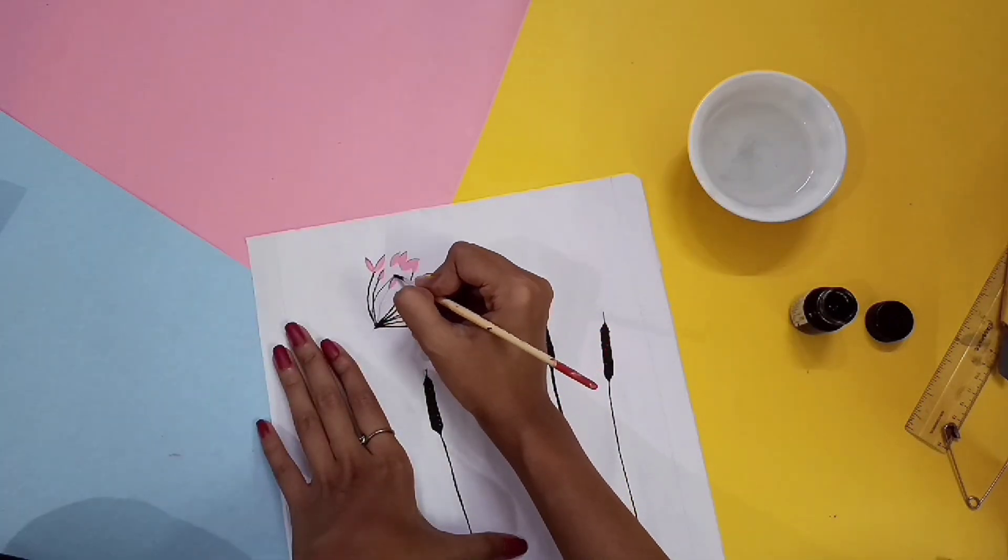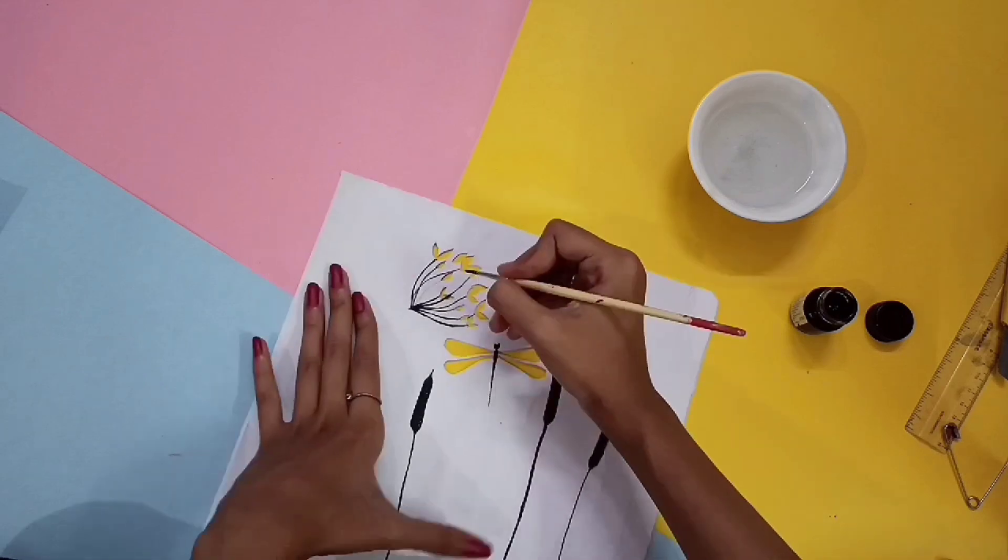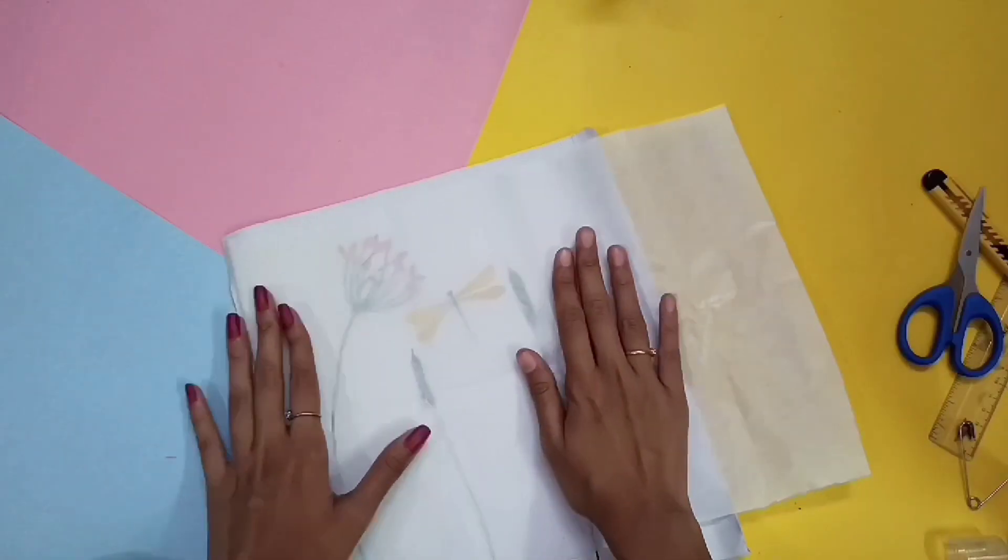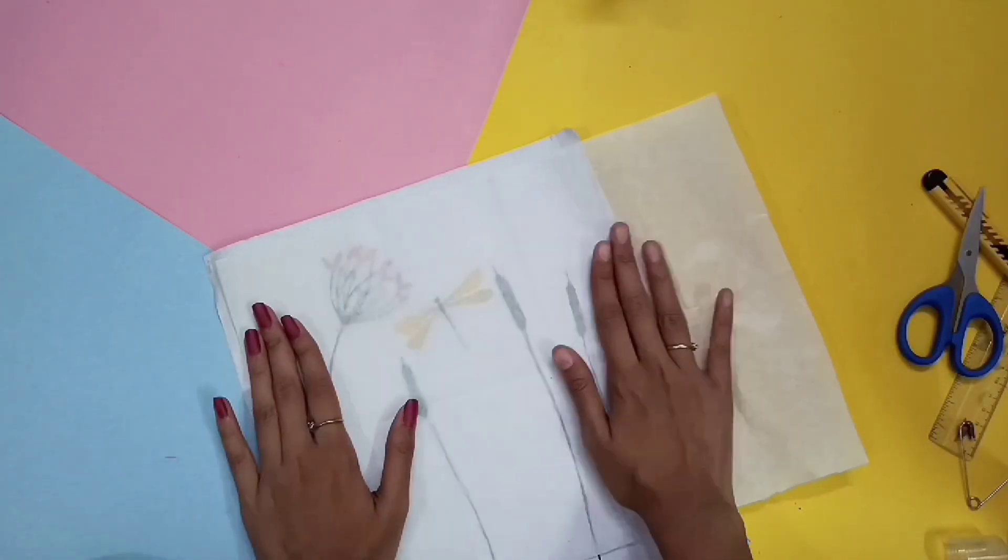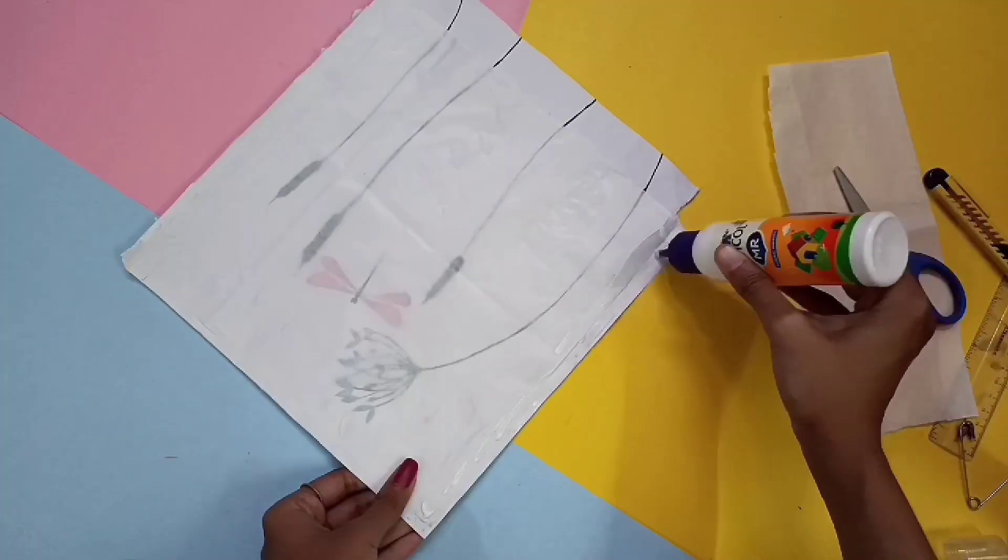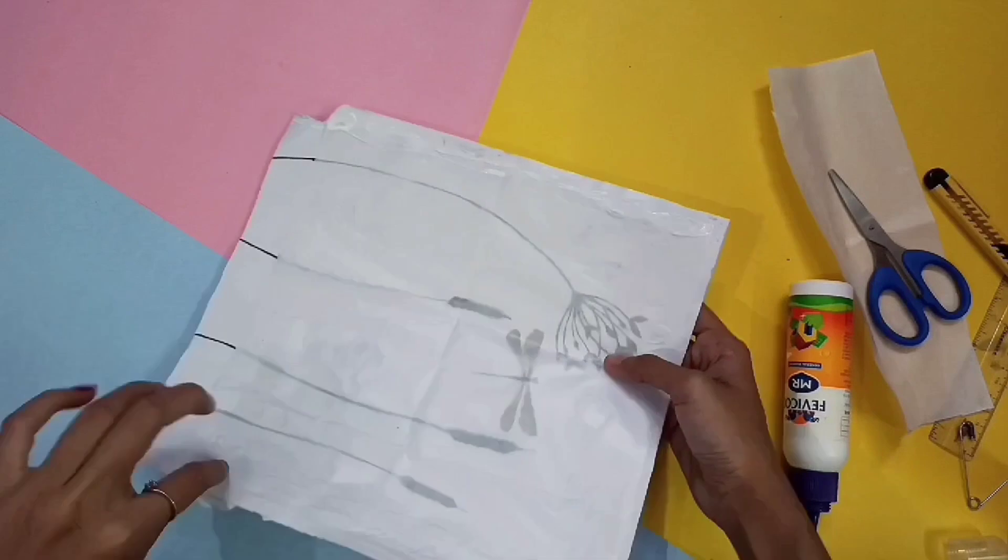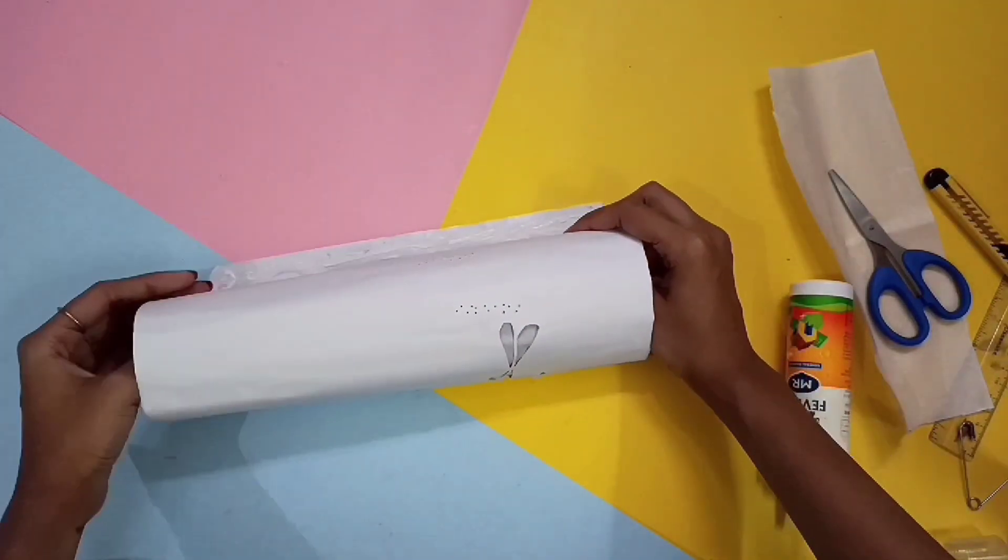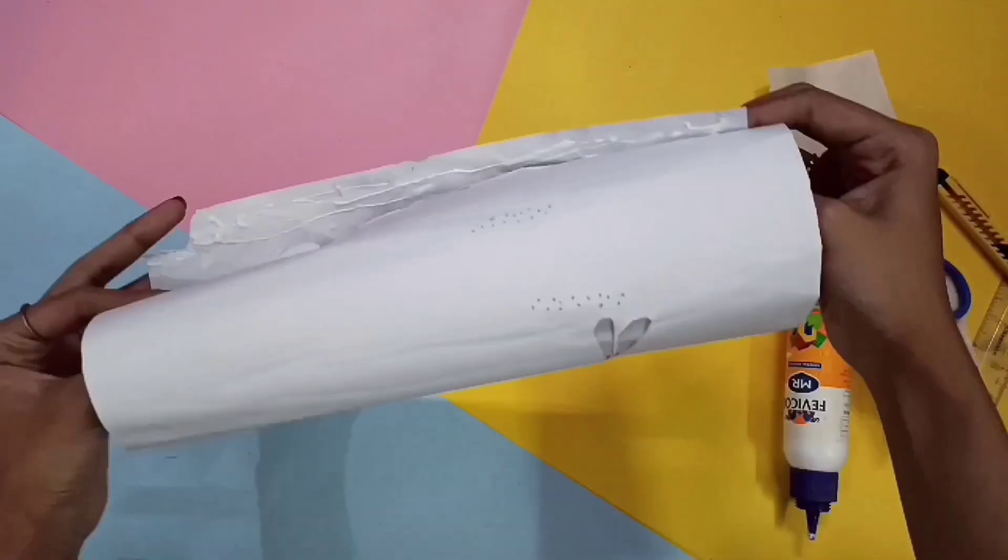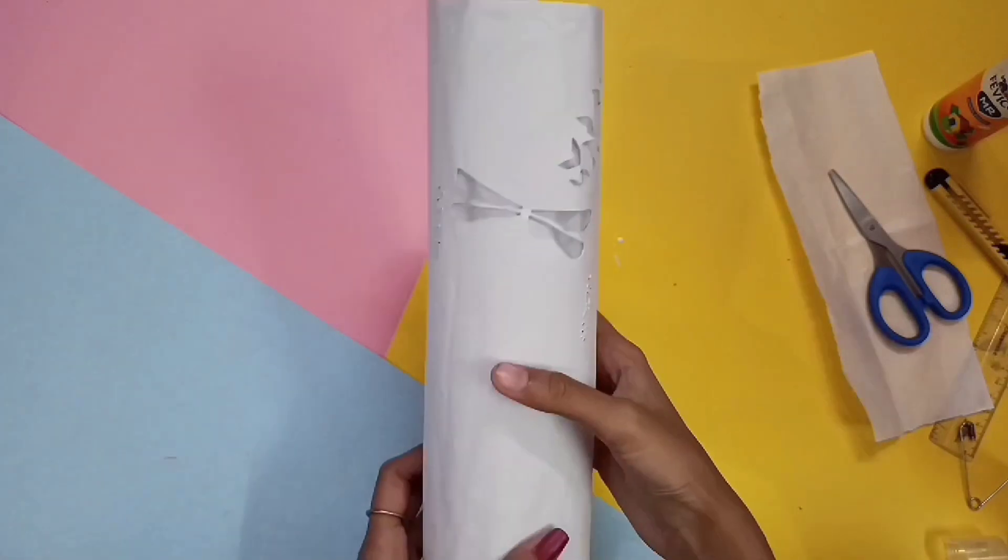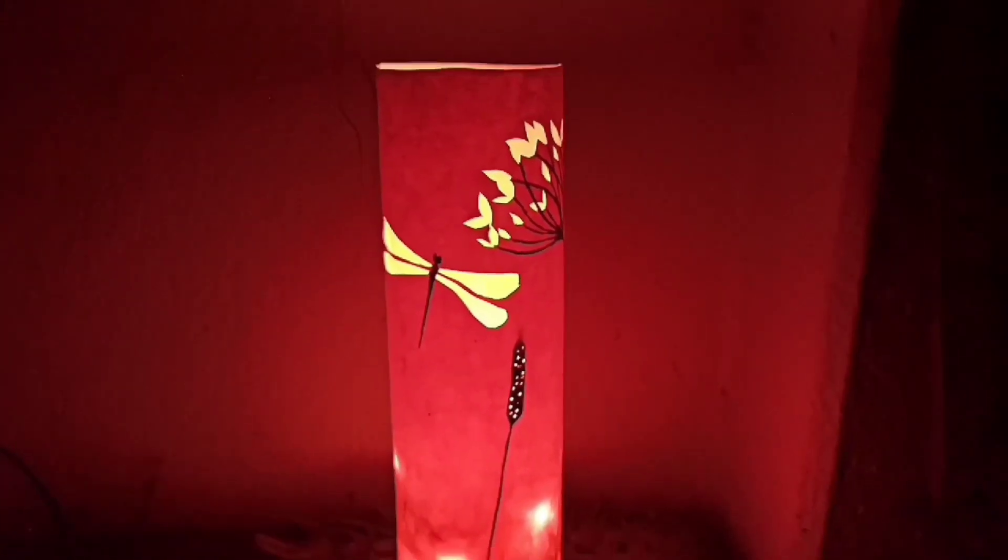Now for the thin lines you can obviously use a marker if you are not comfortable with painting. Now I'm taking a butter paper and stick it on the paper. Now roll the paper and stick the edges. Take a string light or fairy lights or any kind of small bulbs and keep it inside the lamp and you are done. Look how pretty it looks.